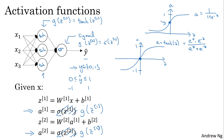Sometimes to denote that the activation functions are different for different layers, we might use square bracket superscripts to indicate that g superscript [1] may be different than g superscript [2], where superscript [1] refers to the hidden layer and superscript [2] refers to the output layer. Now, one of the downsides of both the sigmoid function and the tanh function is that if z is either very large or very small, then the gradient or the slope of this function becomes very small, which can slow down gradient descent.